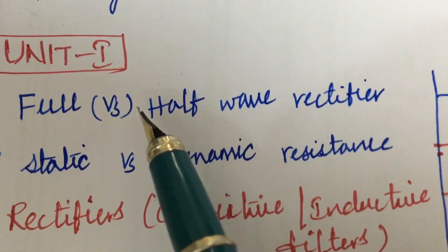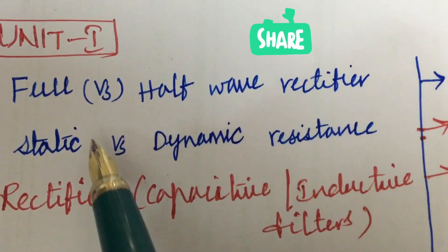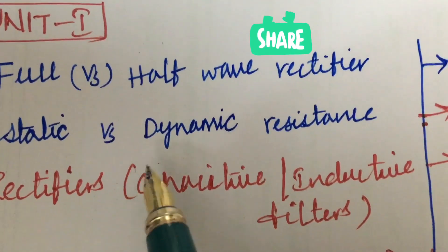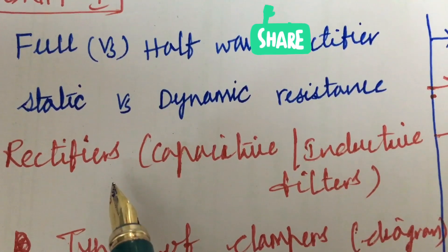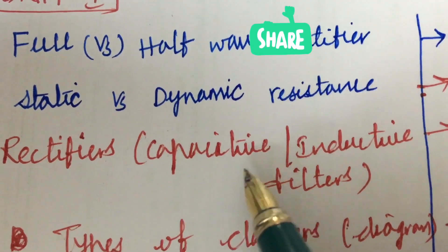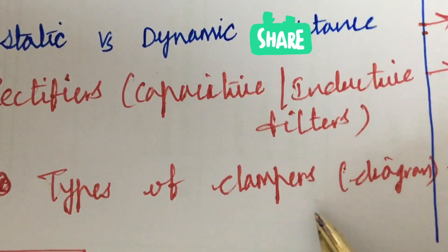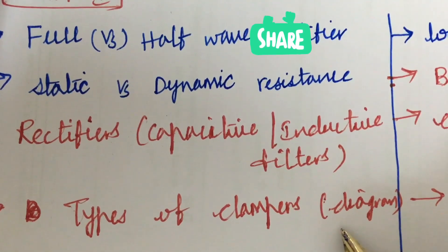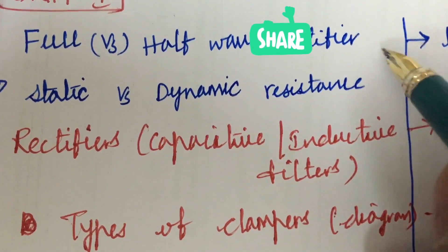Later, Unit 1 is all about the rectifiers - the differences between full wave rectifier as well as half wave rectifier, and the static as well as the dynamic resistance differences. Rectifiers and their types related to capacitive as well as inductive filters, and the types of clampers along with diagrams. Hope you are getting the problems also, dear students, and the expressions and derivations too.